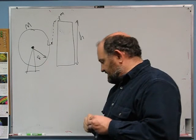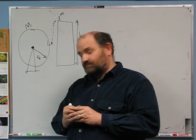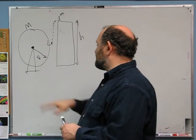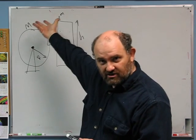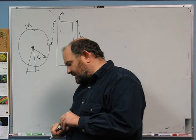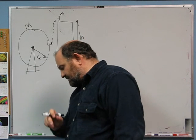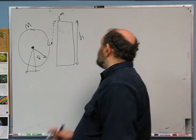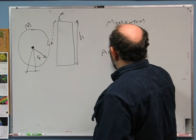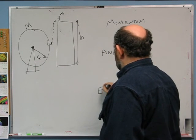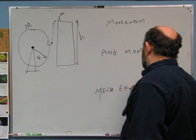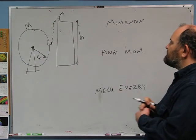Consider the system to be Bond, the Ferris wheel, and the gravitational potential energy between Bond and the Earth. Which of momentum, angular momentum about the center of the wheel, and energy is conserved as Bond falls from the top of the building to the chair?